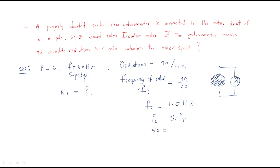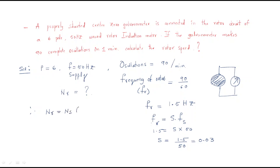The stator supply frequency is 50 Hz. The rotor frequency equals slip × stator frequency, so slip = fr / fs = 1.5 / 50 = 0.03. The synchronous speed ns = 120 × 50 / 6 = 1000 rpm. Rotor speed nr = ns × (1 − s) = 1000 × (1 − 0.03) = 970 rpm.